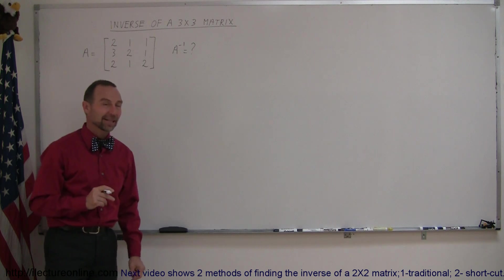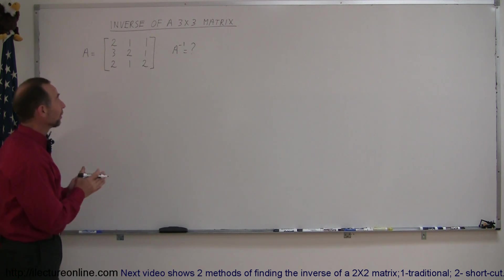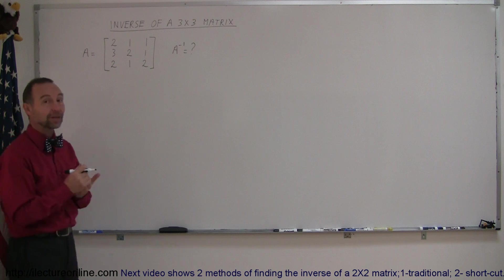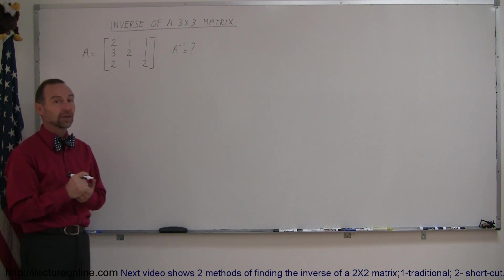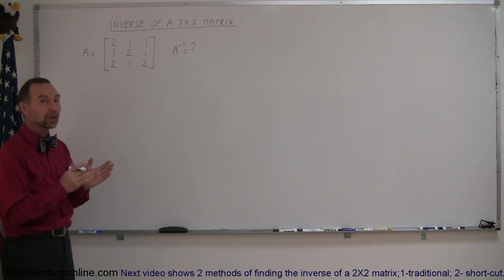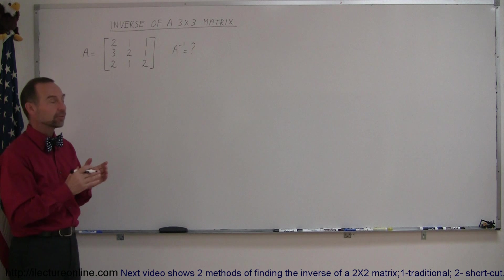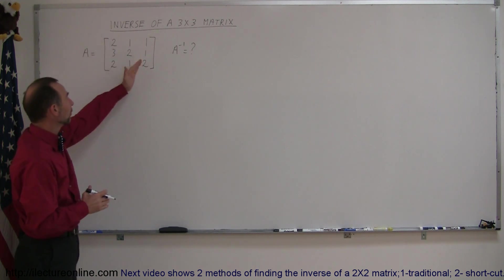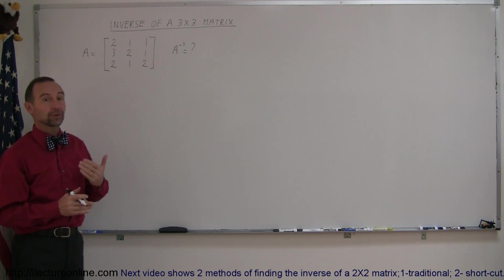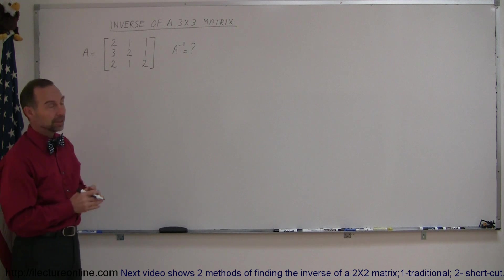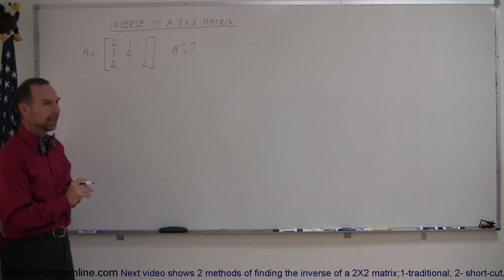Welcome to iLectureOnline. Here's another example of how to work with matrices — in particular, we're going to find the inverse of a 3 by 3 matrix. To find the inverse of a matrix, the matrix must be a square matrix: it must have the same number of columns as it has rows. So we can do this for a 2 by 2, a 3 by 3, a 4 by 4, and so forth.